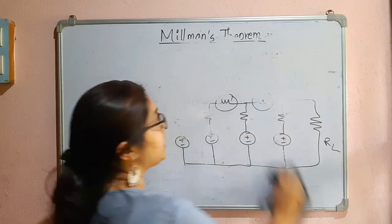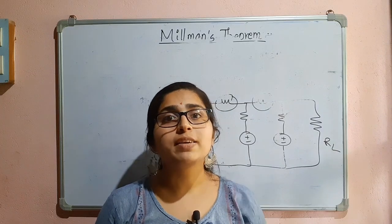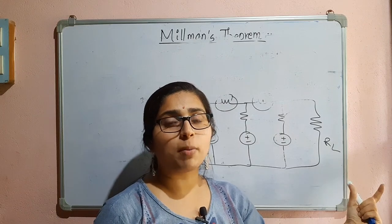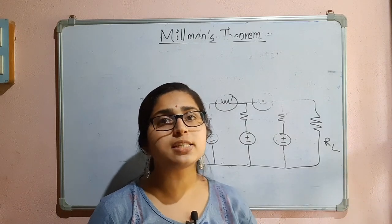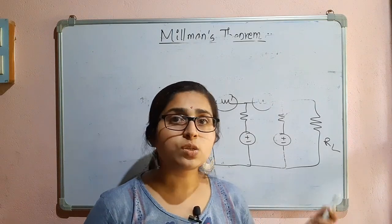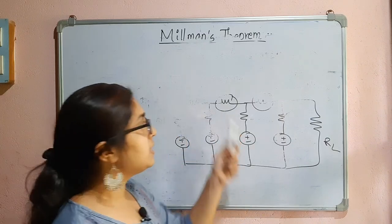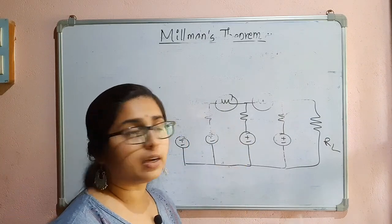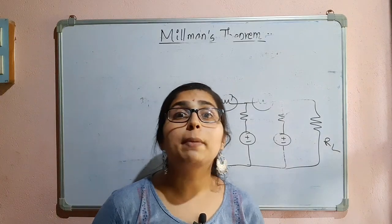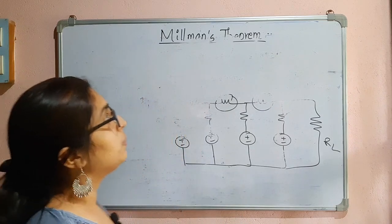The advantage of Millman's theorem is that it does not involve solving simultaneous equations. You just know E1 and the formula for E_equivalent and R_equivalent, substitute, and get the answer. So Millman's theorem is very easy to apply. The disadvantages are: it cannot be used when impedances exist between the independent sources, and it cannot be used when dependent sources are present. That is all about Millman's theorem.